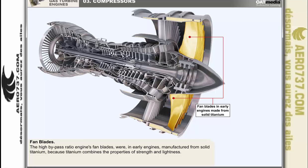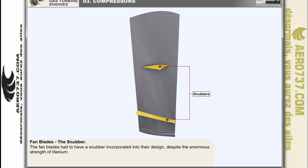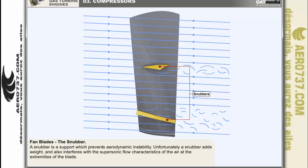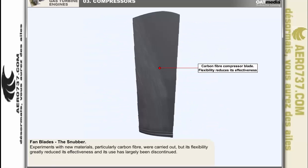The high bypass ratio engine's LP compressor blades — more commonly known as fan blades — were manufactured in early engines from solid titanium, because titanium combines the properties of strength and lightness. A low blade weight is essential if the fan is to withstand the out-of-balance forces which would occur if a fan blade failed. Despite the enormous strength of titanium, the fan blades had to have a snubber incorporated — a support fitted at mid-span to prevent aerodynamic instability. Unfortunately, snubbers add weight and interfere with the supersonic flow characteristics of the air at the blade extremities. Experiments with carbon fibre were carried out, but its flexibility greatly reduced its effectiveness and its use has largely been discontinued.